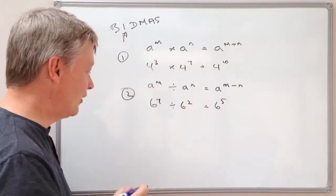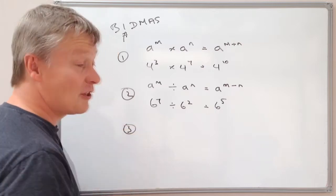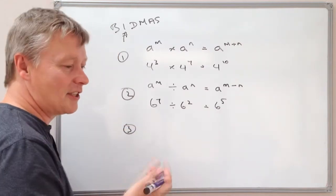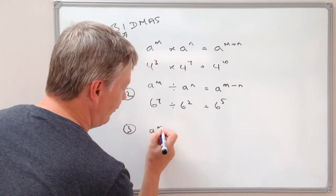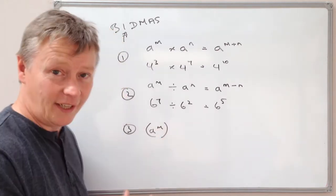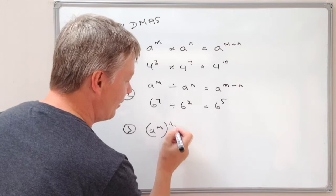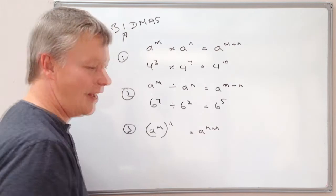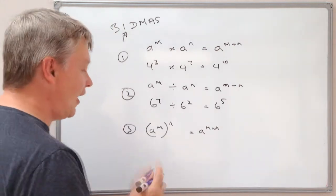And the third rule that you need to remember is something that does actually crop up a little bit in exam papers. And it's something like a to the power of m, in brackets, multiplied to the power of n, is going to be a to the power of m times n. So I'll give you a practical example of that.